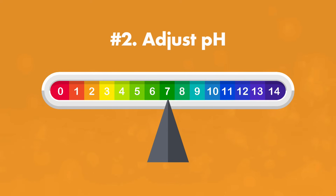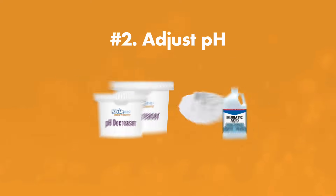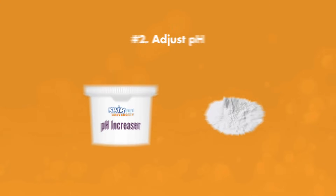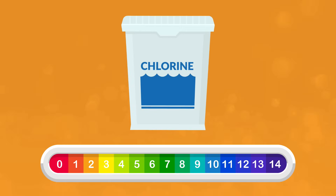Next, adjust your pH. You can lower your pH with a pH Decreaser or muriatic acid, or if you need to raise the pH, you can use a pH Increaser or soda ash. After your alkalinity and pH, adjust your chlorine levels or whatever sanitizer you use. The pH helps your sanitizer work more effectively, which is why it's important to adjust your pH first.